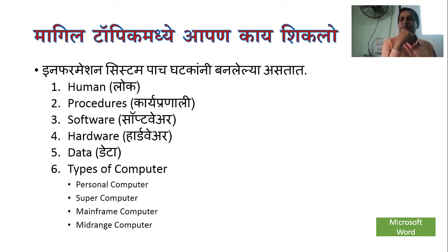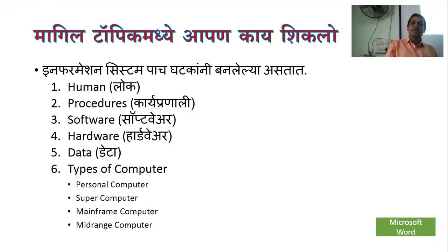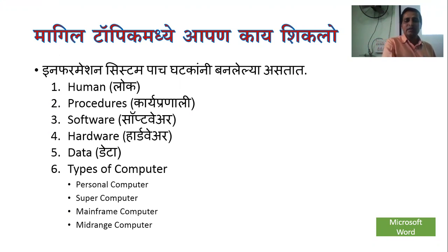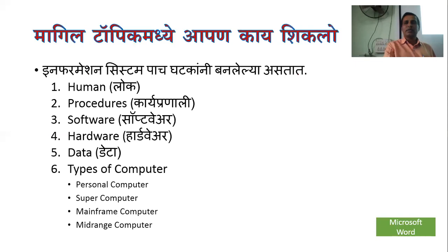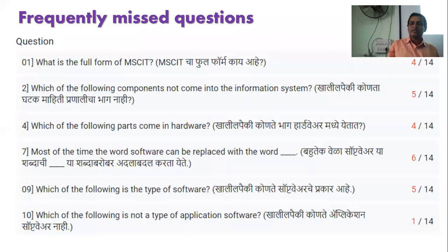You have to use the information system — it's called software, hardware, data, and the types of computers. You have to use the 4 types of computers, like personal computers, super computers, mainframe computers, and mid-range computers.